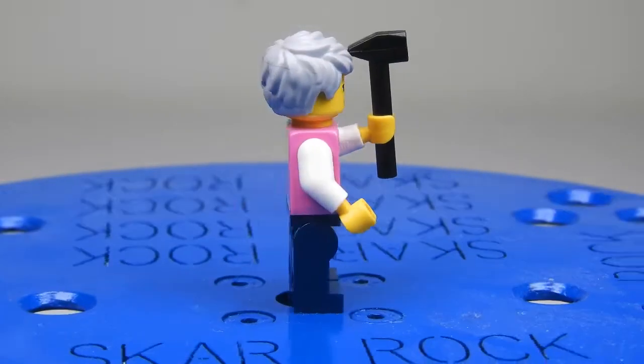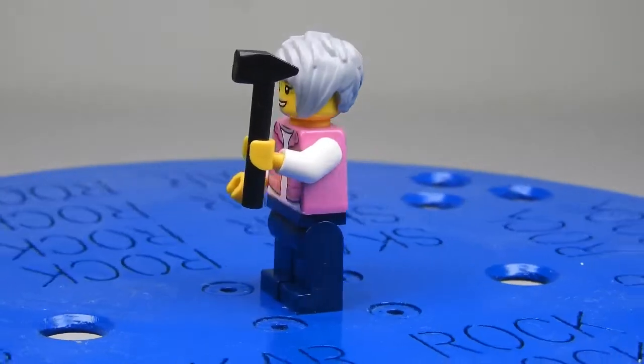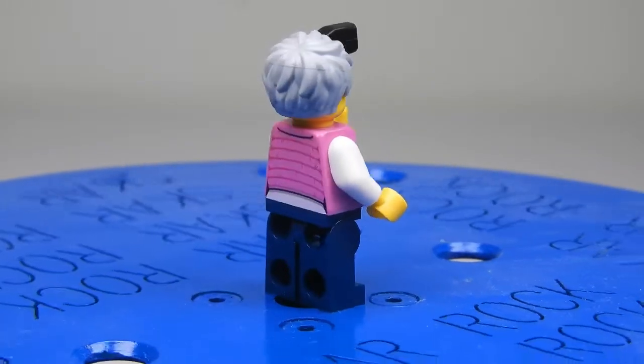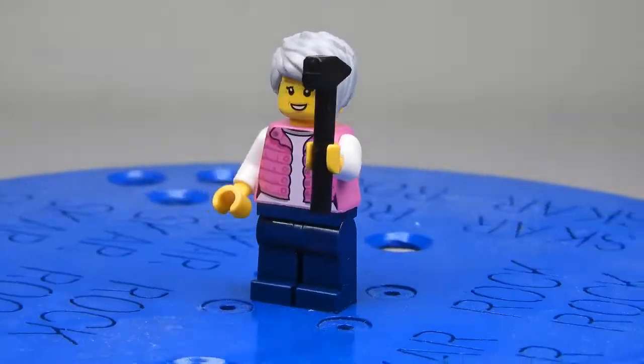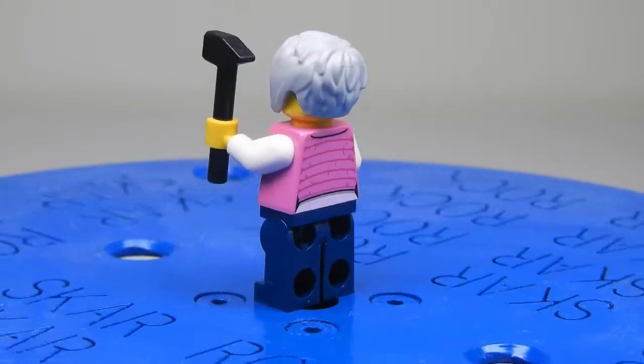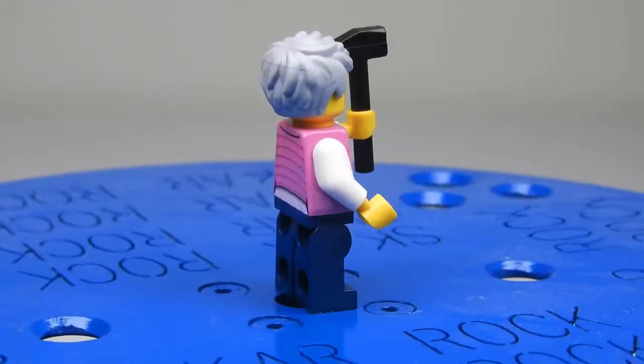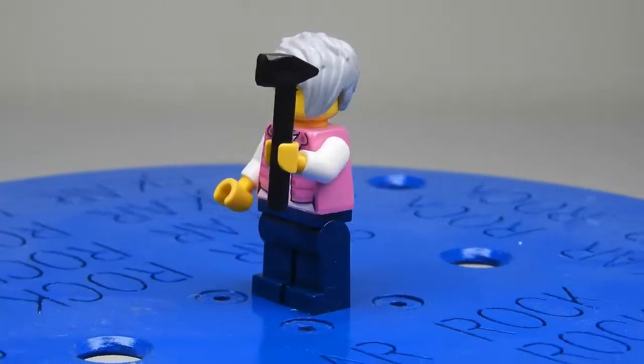Moving on to figures, here we have the first figure other than the ones I already showed you in the build. This is sort of a middle age lady who has a bright pink coat with a white underside and white sleeves. She's got a black hammer with dark blue trousers and this grey hair piece, which personally I haven't seen before.